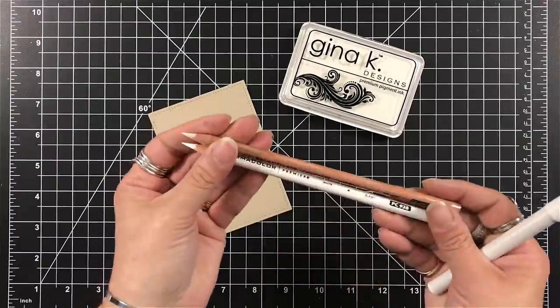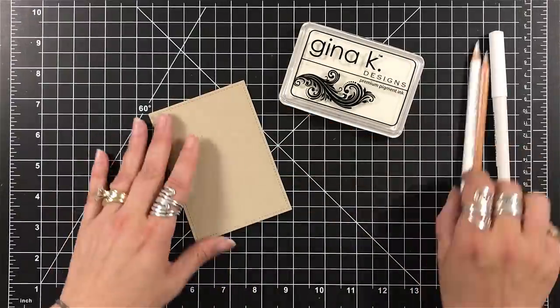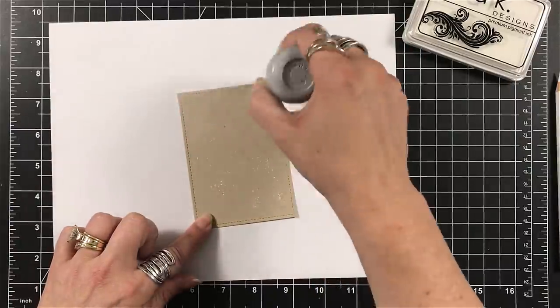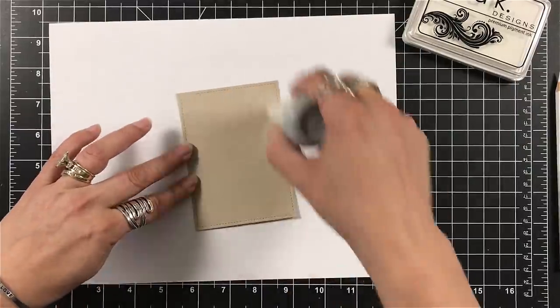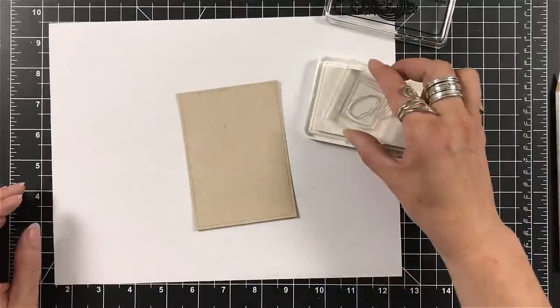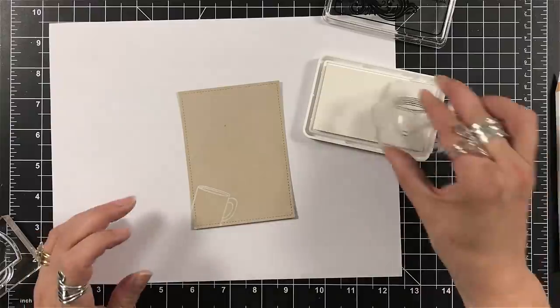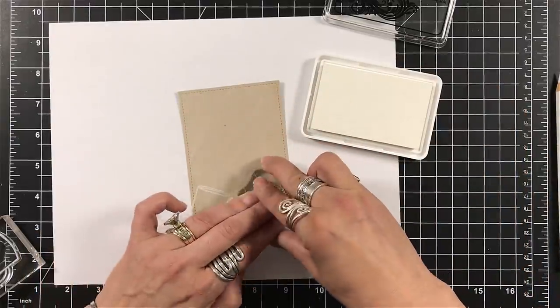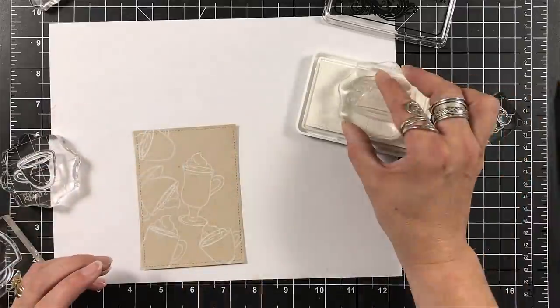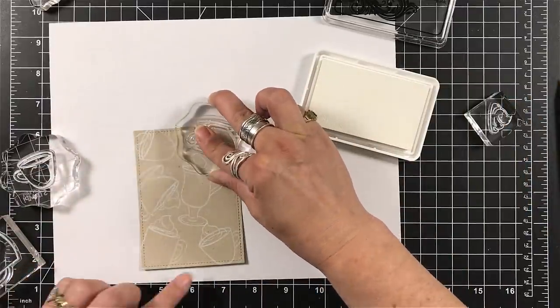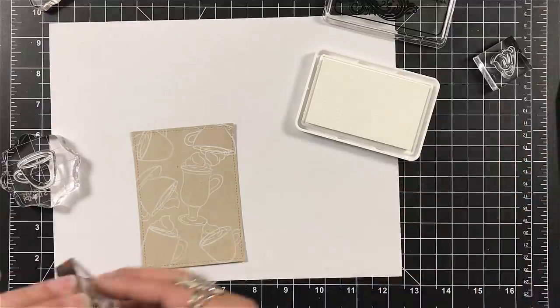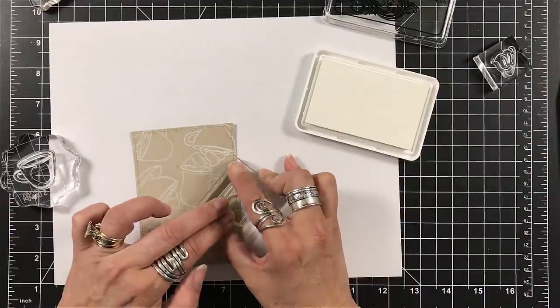So for card number three, this one I enjoyed. I pulled out just my white Prismacolor pencil. I pulled out the blender, which is really a colored pencil as well, but strange as it is, it's colorless. So I grabbed that as well. I used one of my stitch rectangles from Lawn Fawn and one of the smaller ones. And what I'm going to do is I've grabbed the coffee mugs, and I'm going to stamp them in my Gina K white pigment ink. I'm a fan of the Gina K white pigment. I like the way it stamps. I like the coverage that it gives.